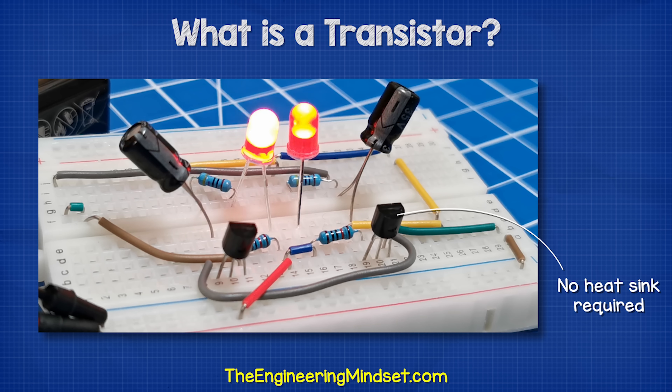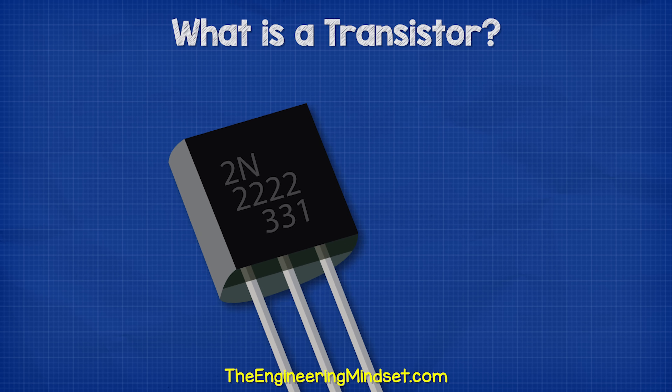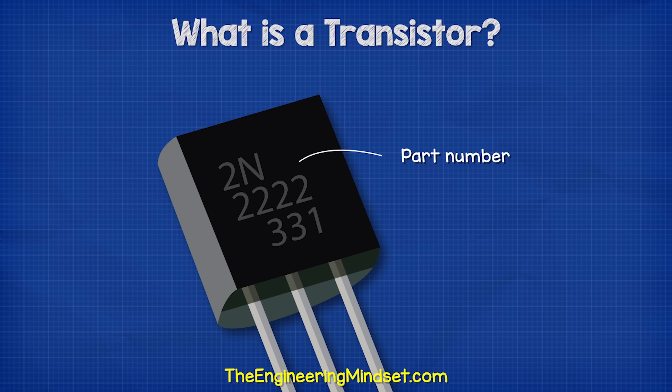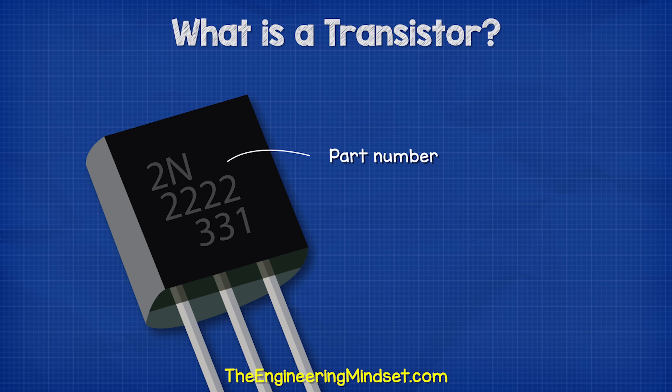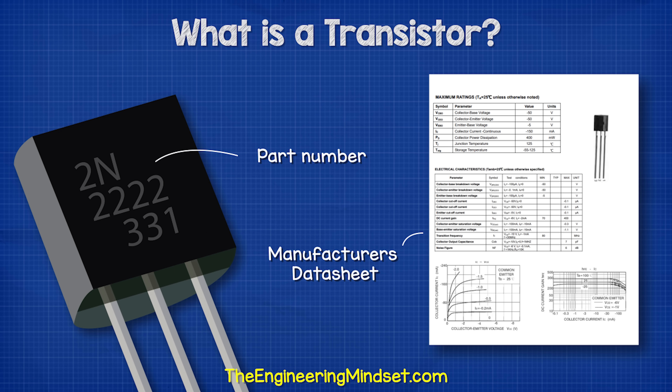On the body of the transistor, we find some text. This will tell us the part number, which we can use to find the manufacturer's data sheet. Each transistor is rated to handle a certain voltage and current, so it's important to check these sheets.